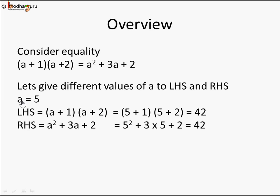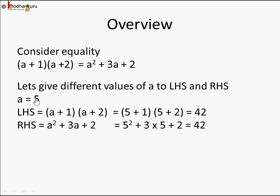Now put a = 5 in the right hand side: a² + 3a + 2. This becomes 5² + 3×5 + 2. 5² is 25, 25 + 15 is 40, and 40 + 2 is 42. So both left hand side and right hand side are equal for a = 5.